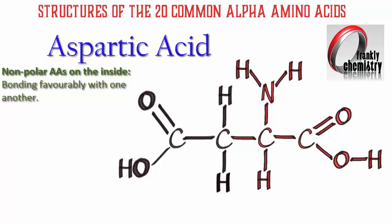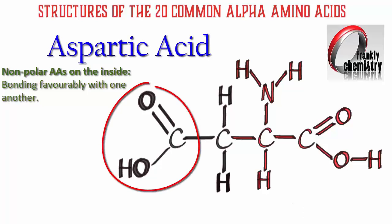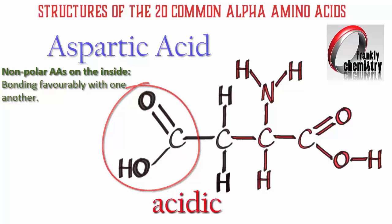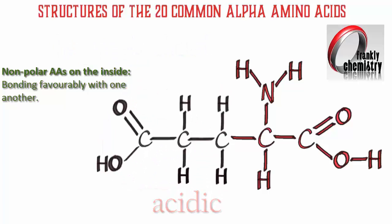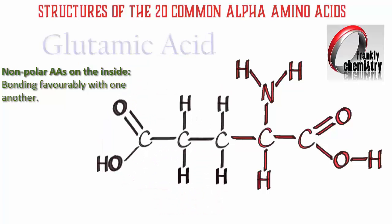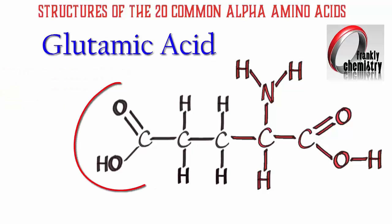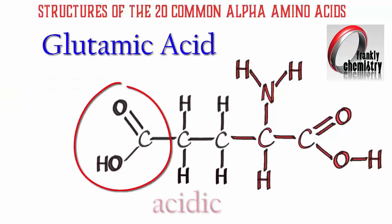Here's aspartic acid. Aspartic acid has a second carboxyl group. So while in the previous amino acids we had one basic group and one acidic group which cancelled out, here we have a net acidity because of that second carboxyl group. And here's glutamic acid — like aspartic acid, it has a second carboxyl group, which gives it a net acidity.